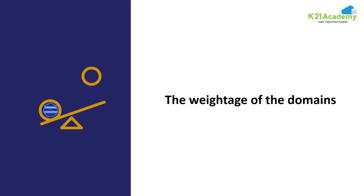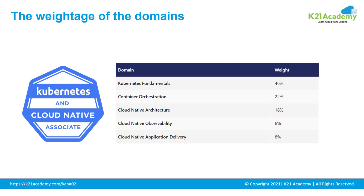Now let's see the weightage of the domains in the exam. The Kubernetes and Cloud Native Associate exam consists of 5 main domains: Kubernetes Fundamentals at 46%, Container Orchestration at 22%, Cloud Native Architecture at 16%, Cloud Native Observability at 8%, and Cloud Native Application Delivery at 8%. I suggest focusing more on Kubernetes Fundamentals as it has the highest weightage of any domain.